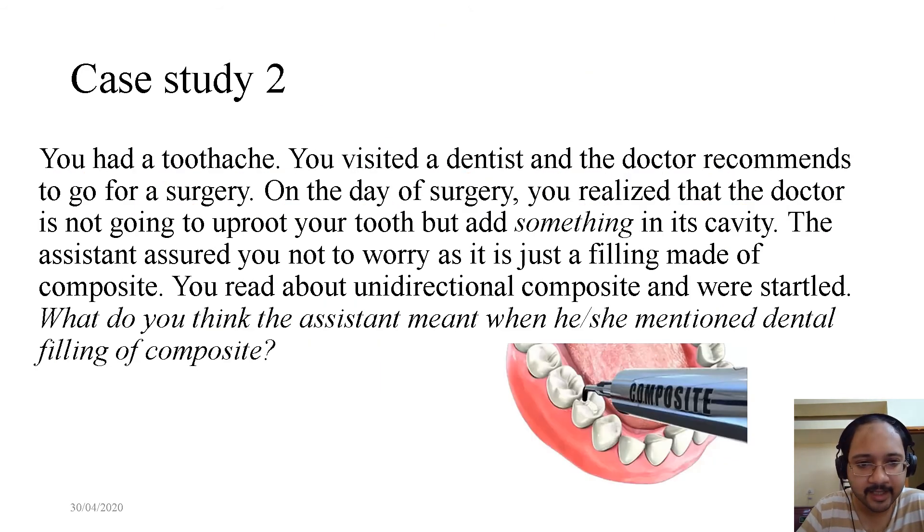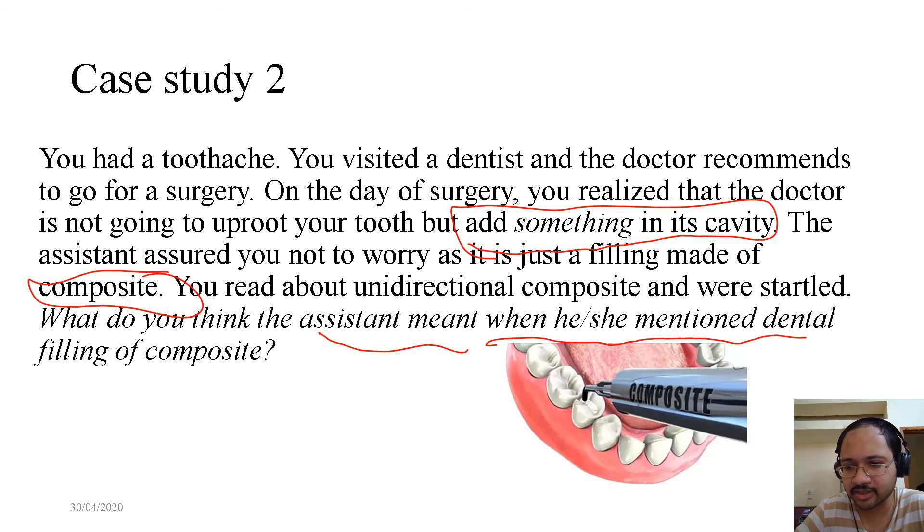Now, coming to case study 2. You had a toothache, you visited a dentist and the doctor recommends to go for a surgery. On the day of surgery, you realize that the doctor is not going to uproot your tooth but add something in its cavity. The assistant assured you not to worry as it is just a filling made of composite. A filling made of composite. You read about unidirectional composite and were startled. Are they going to actually put some unidirectional composite on my tooth? What do you think the assistant meant when he or she mentioned dental filling of composites?